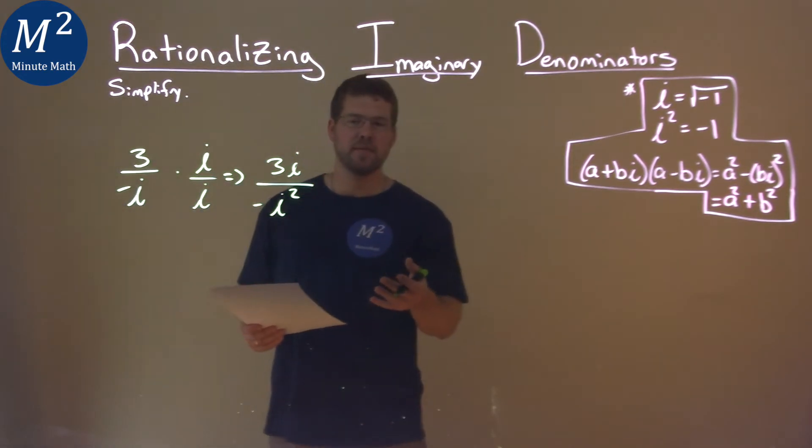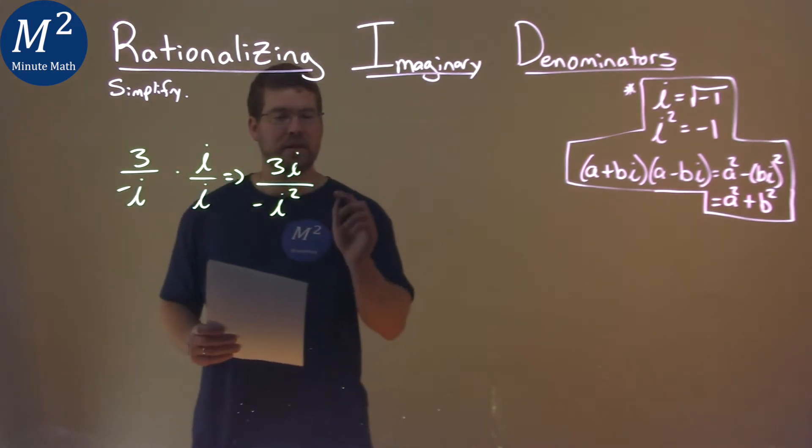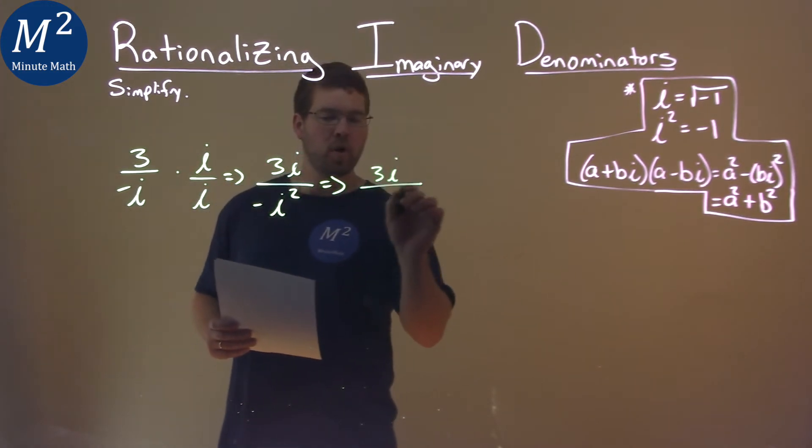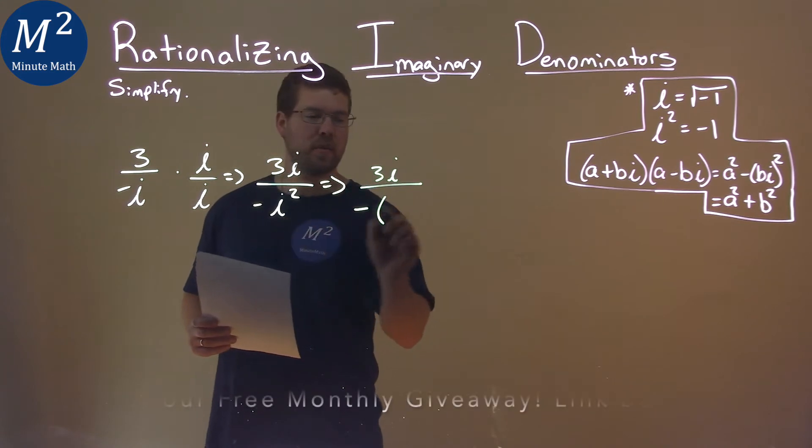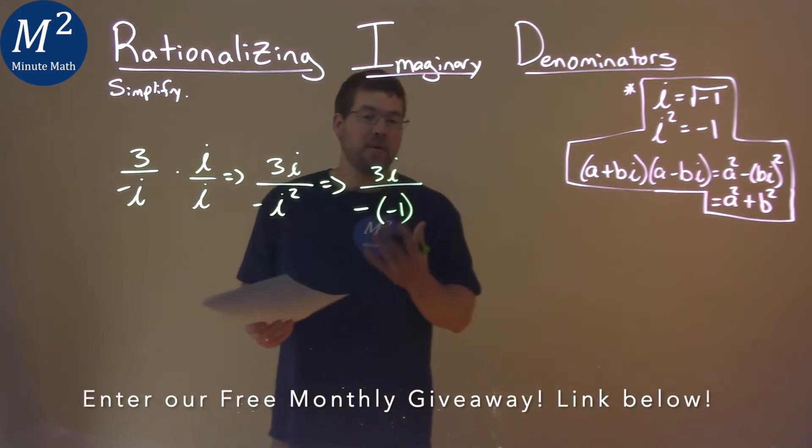So how does that help us? Well, we know i squared equals a negative 1. So we have 3i here over negative, instead of i squared, negative 1, and now we don't have an i in the denominator.